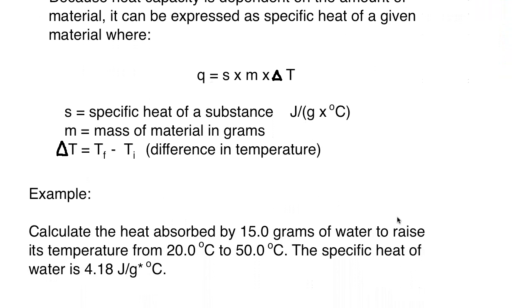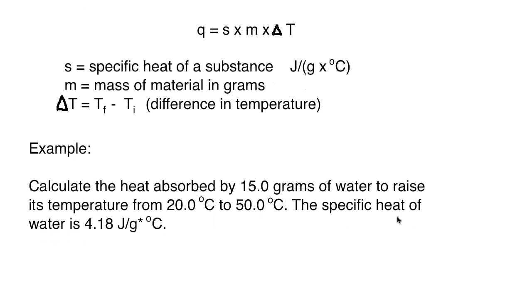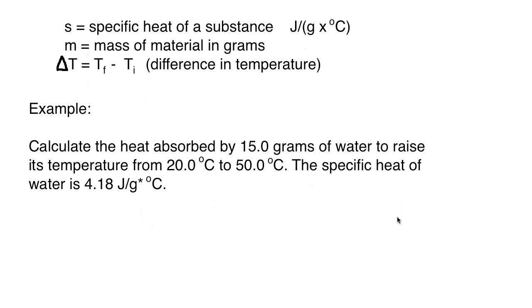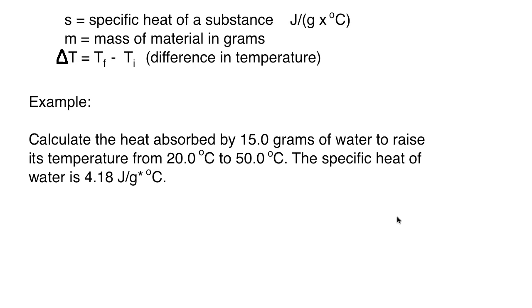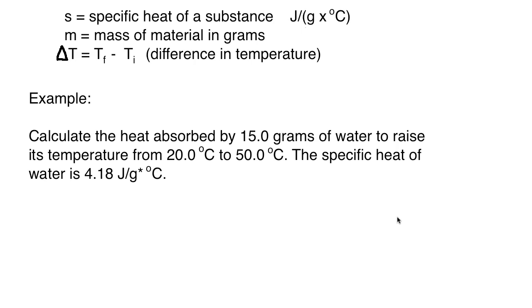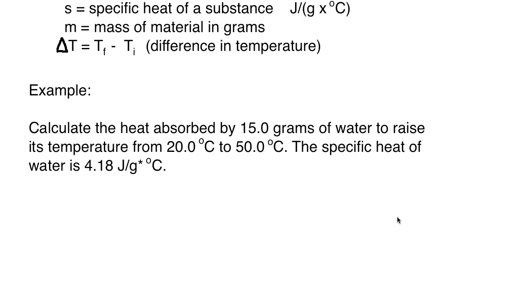Let's take a look at some examples to practice. This first example says calculate the heat absorbed by 15 grams of water to raise its temperature from 20 degrees Celsius to 50 degrees Celsius. The specific heat of water is 4.18 joules per gram times Celsius. So what you should do is pause the video, see if you can figure this out by yourself, and then unpause if you get stuck or if you have an answer and you're ready to go through the walkthrough.